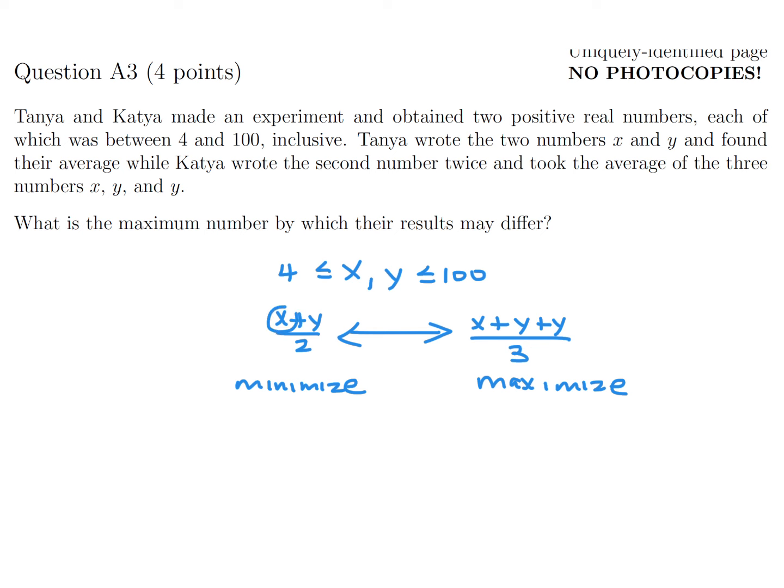Okay, so to minimize that I'll try to choose the smallest value for x, so that's 4. To maximize that, I'll choose the largest possible value for y, which is 100.